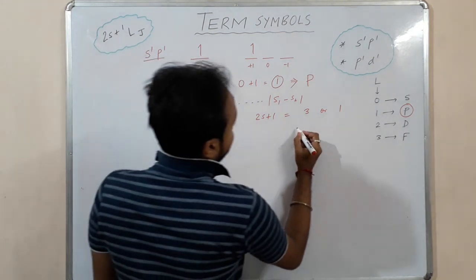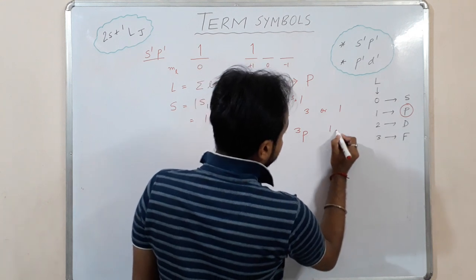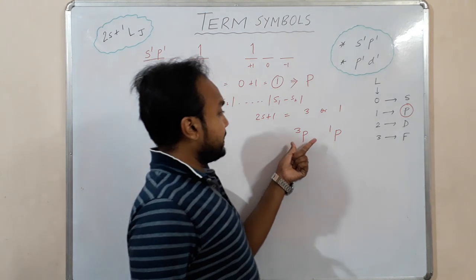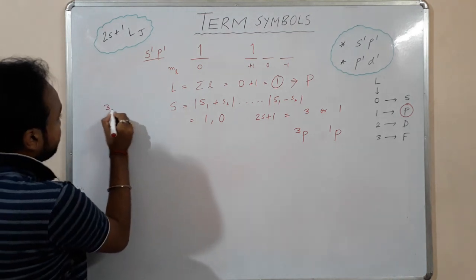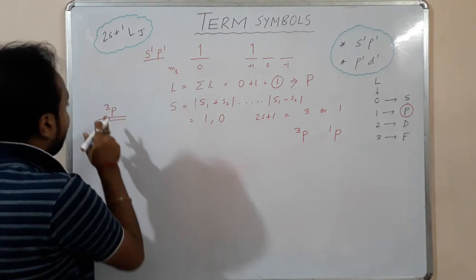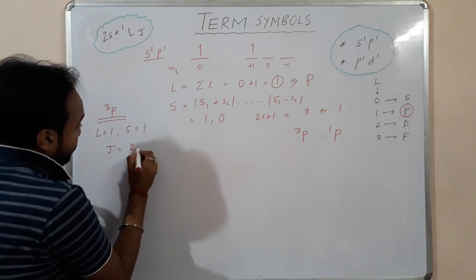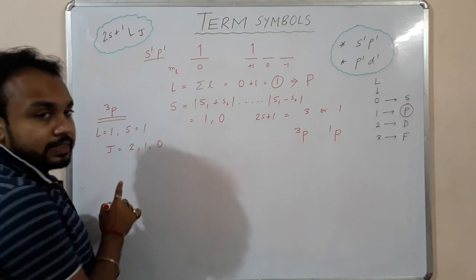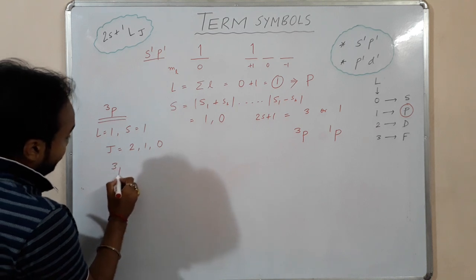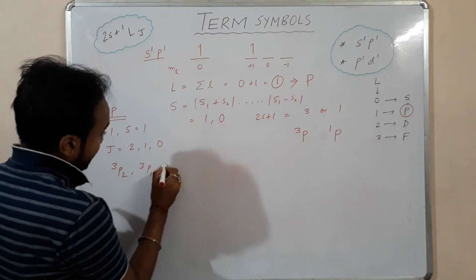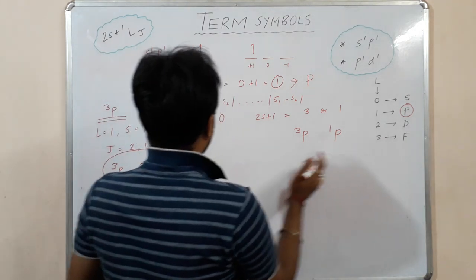So we get either a ³P term or a ¹P term. For the ³P term, L = 1 and S = 1, so J = L+S to L−S, giving J = 2, 1, 0. This gives us three terms: ³P₂, ³P₁, and ³P₀.